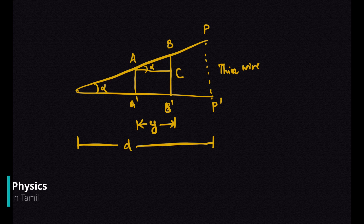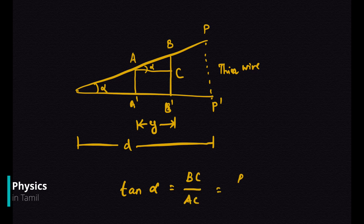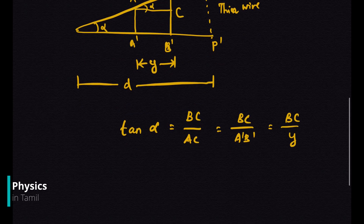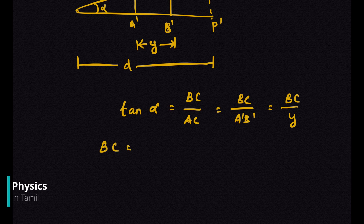If we derive the formula to calculate the thickness of the thin wire — at any position, n-th dark fringes are found, and considering consecutive dark fringes in the geometrical diagram, we can write tan alpha as BC divided by AC. Since A prime B prime has the same value y, we can substitute y. To get bright and dark fringes, the path difference must be equal to lambda by 2.